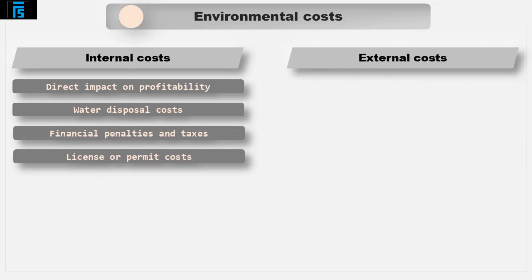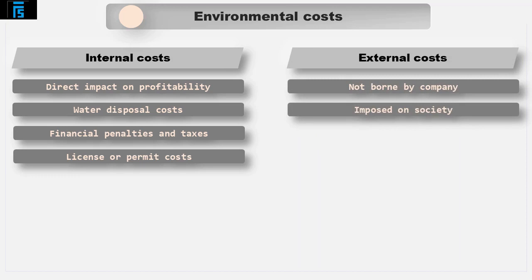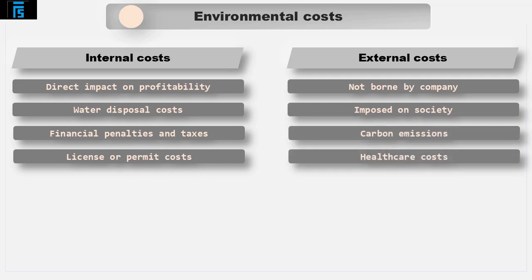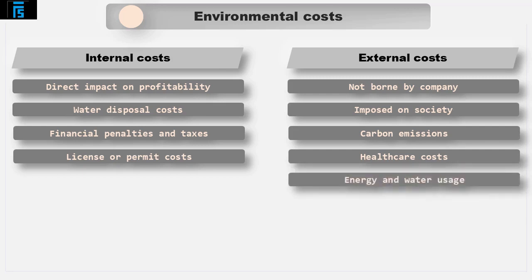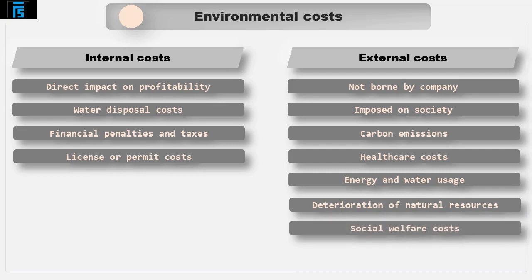External costs are not borne by the company which is responsible for their origin, but instead the costs are imposed on society. Examples of such external costs can include carbon emissions, increased healthcare costs possibly as a result of such carbon emissions, energy and water usage, deterioration of other natural resources such as wildlife or forests, and social welfare costs.